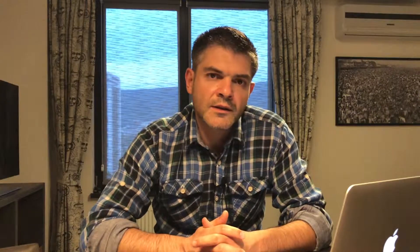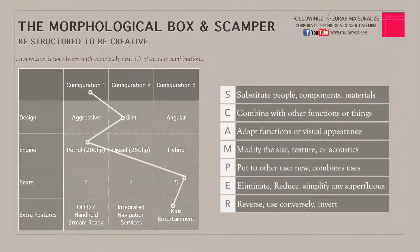The SCAMPER model, on the other hand, is looking from the same perspective at existing parameters and seeing where we can substitute. Can we substitute people, components, materials? Can we combine with other functions or things? Can we adapt functions or visual appearance? Can we modify the size, texture, or acoustics, depending on the product or service?